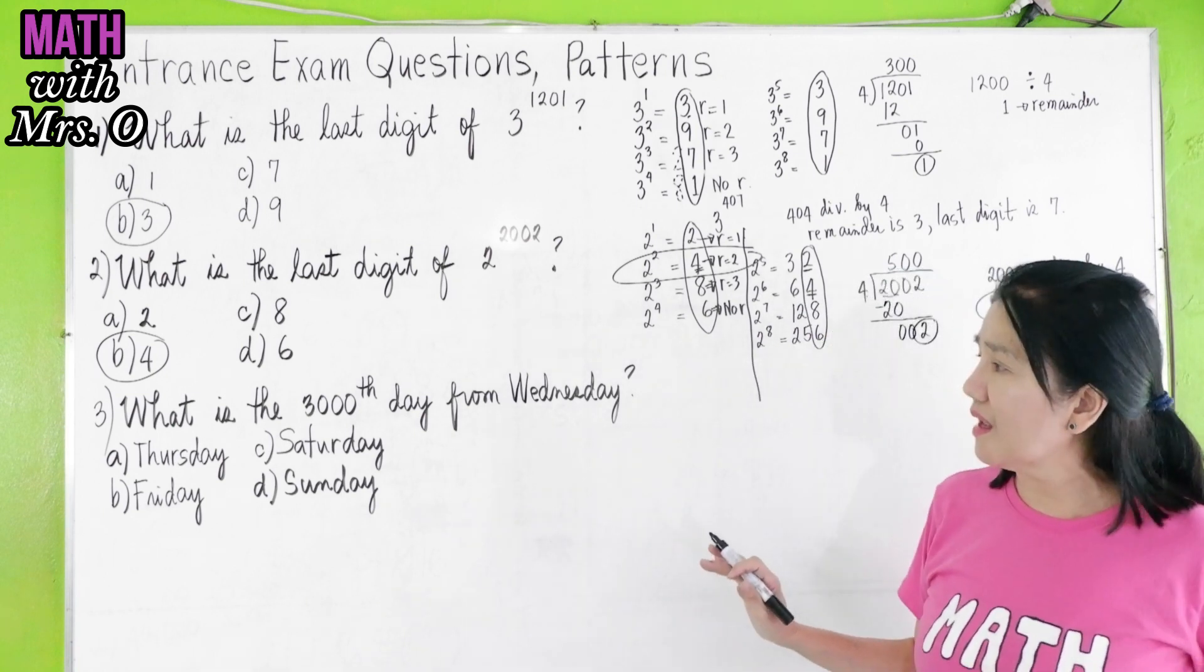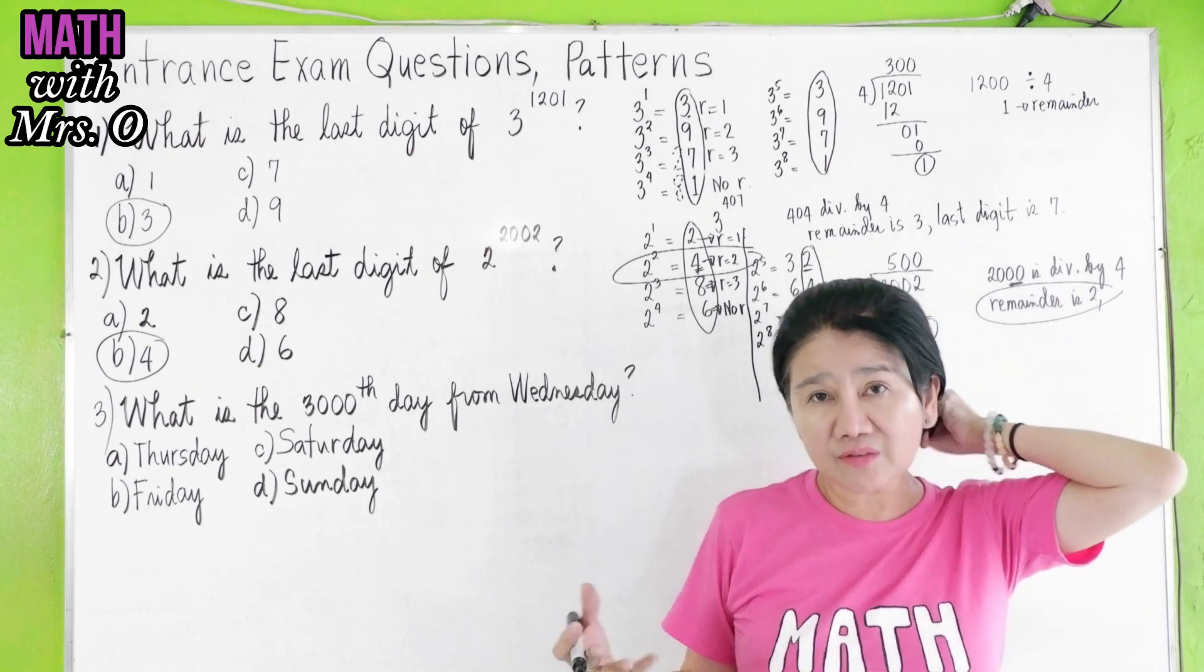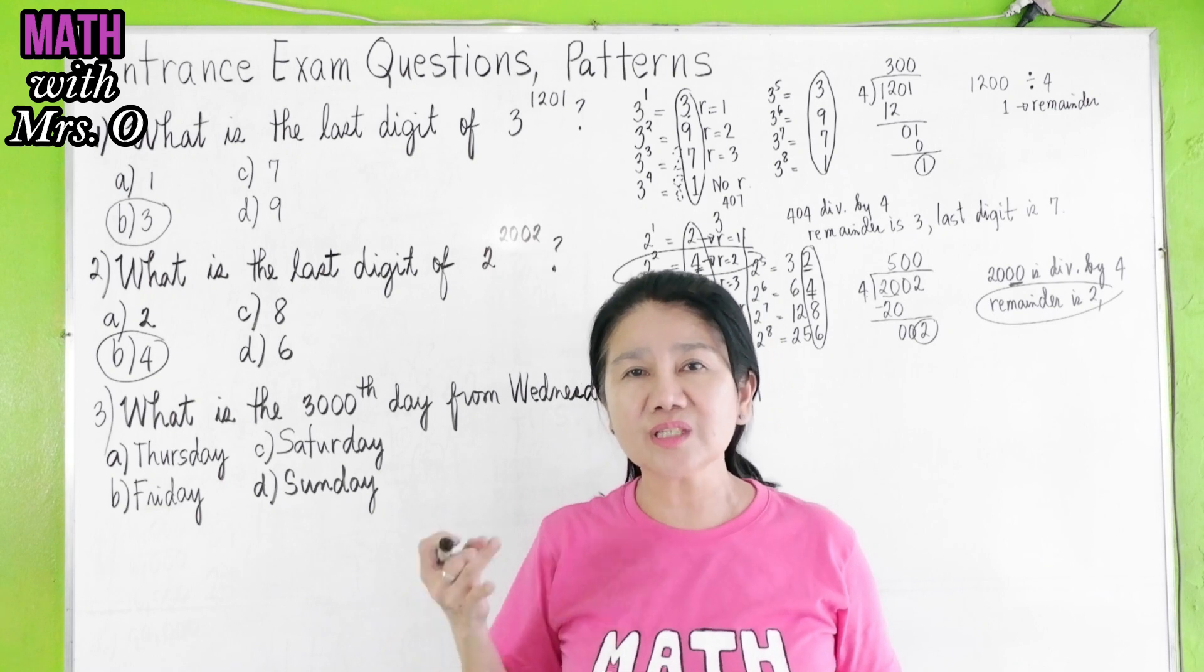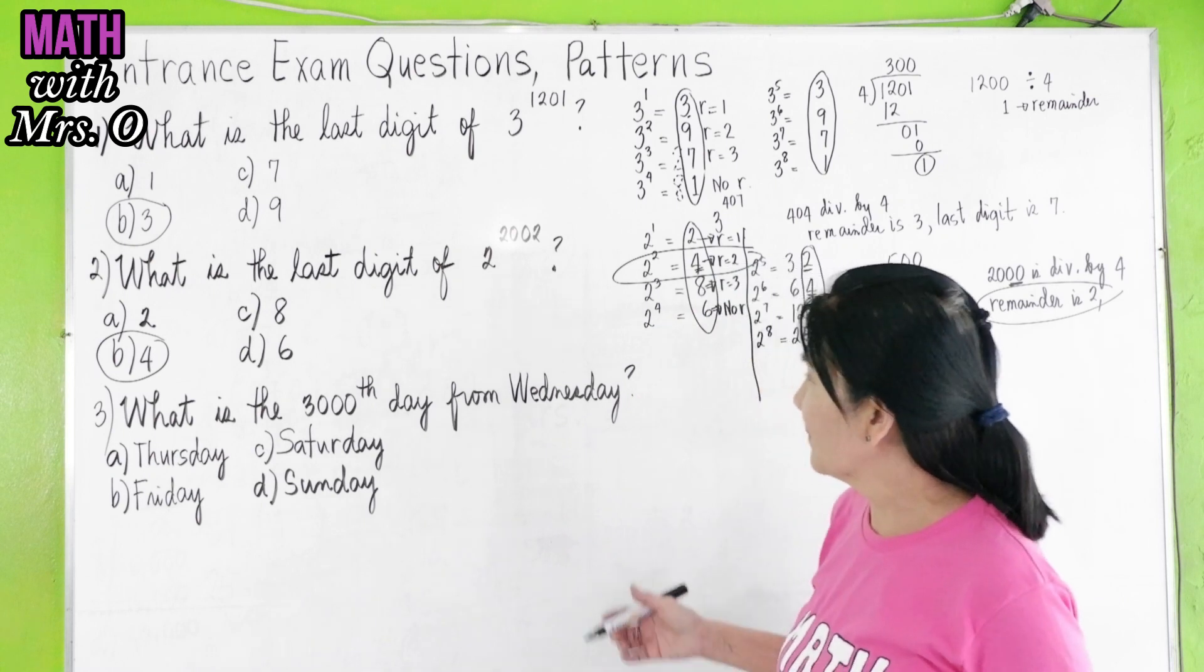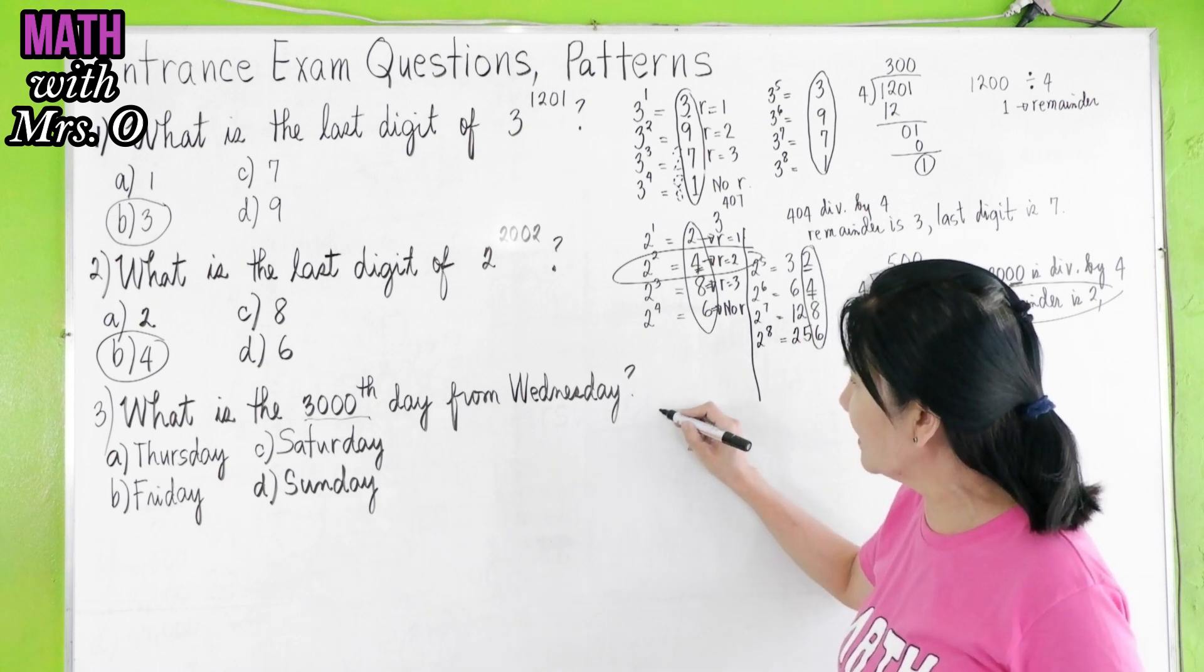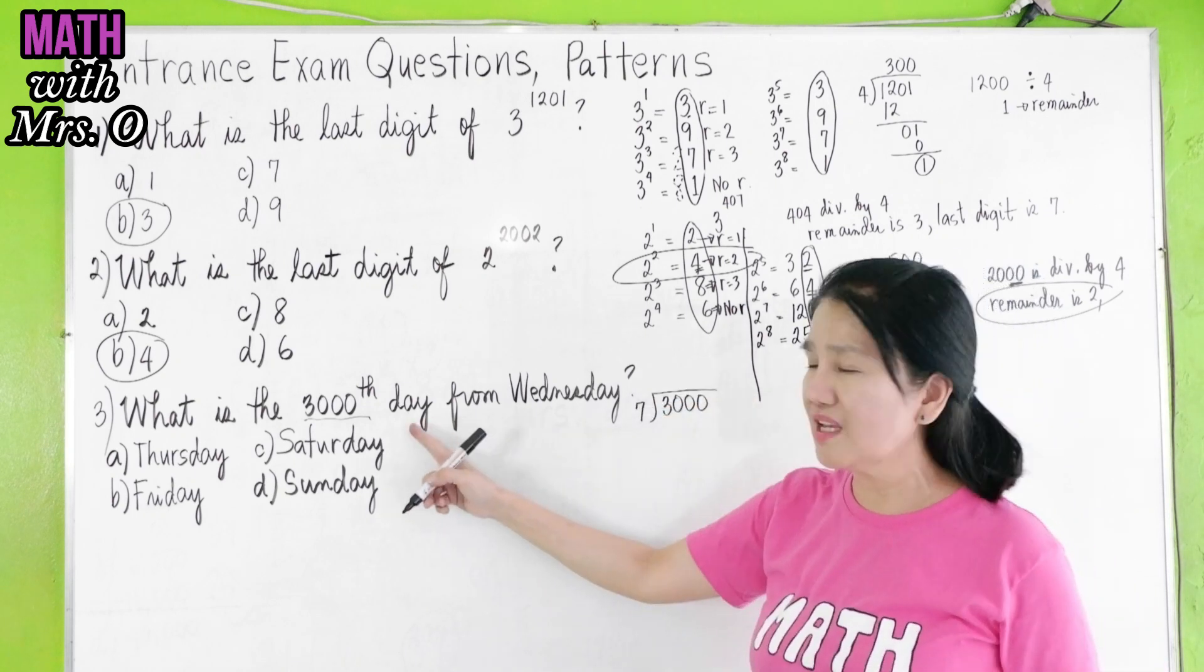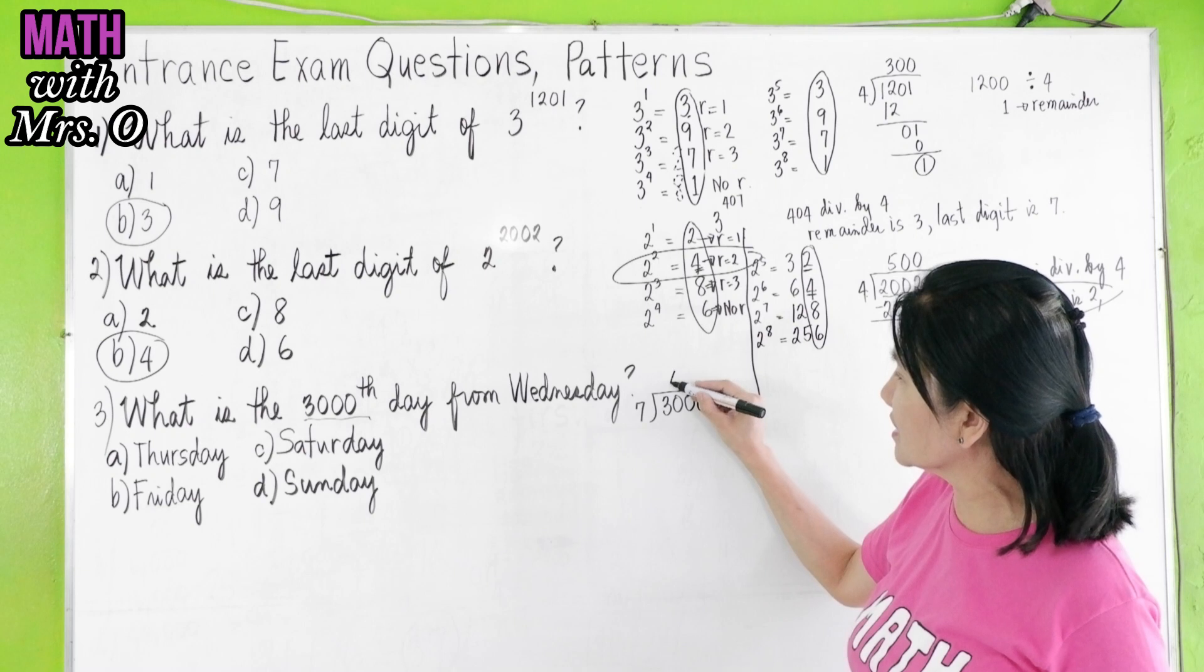Now, what about problem number 3? What is the 3,000th day from Wednesday? Is there a pattern from Monday, Tuesday, Wednesday, Thursday, Friday, Saturday, Sunday, then you go back to Monday, Tuesday, Wednesday, Thursday, Friday, Saturday, Sunday? Yes, there is. Therefore, what do we do with 3,000? We divide it by 7. Why 7? There are 7 days in a week.